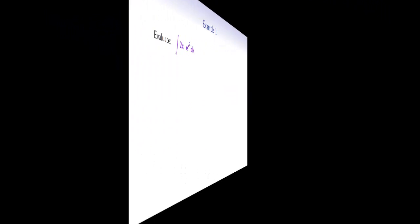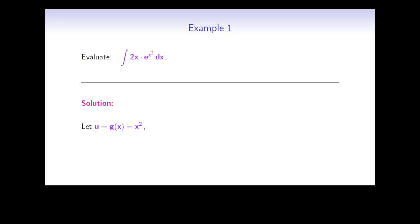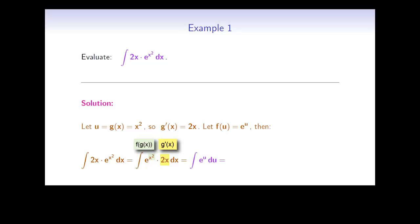Let's look at a simple example. Evaluate the integral of 2x times e to the x squared dx. Here we need to integrate a product of two functions. e to the x squared is the composition of the exponential function and the function x squared, while 2x is exactly the derivative of the inner function x squared. So we let u equal g of x equal x squared, and then the derivative g prime of x is equal to 2x. We take the outer function f of u to be e to the u. Using the substitution formula, this equals the integral of e to the u du, which is equal to e to the u. Now u is equal to x squared, so e to the u is equal to e to the x squared, plus c, as this is an indefinite integral.